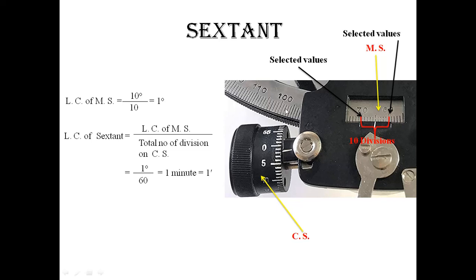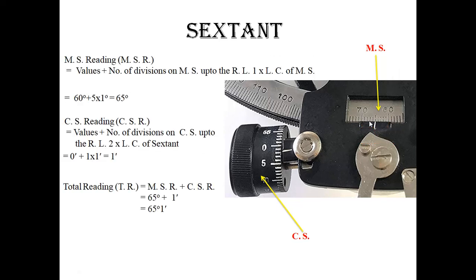You can see that the total number of divisions on the circular scale is 16, giving a least count of 1 minute. This means that the interval between two divisions on the main scale is divided into 16 parts, and each part is equal to 1 minute.